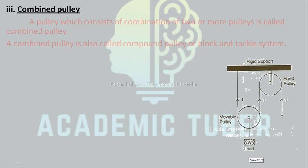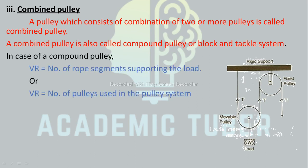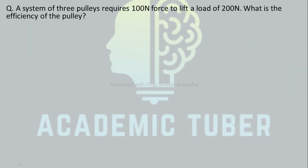Combined (compound) pulley: a pulley which consists of a combination of two or more pulleys is called a combined pulley. It is also called a compound pulley or block and tackle system. In a compound pulley, VR equals the number of rope segments supporting the load, or equivalently, VR equals the number of pulleys used in the pulley system.